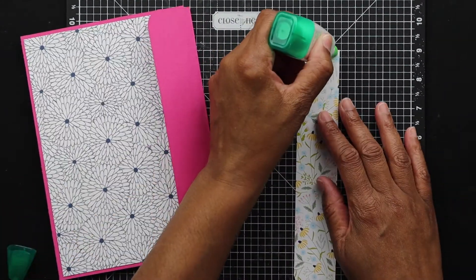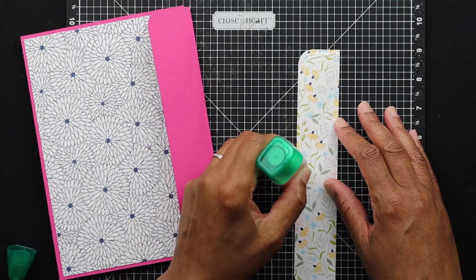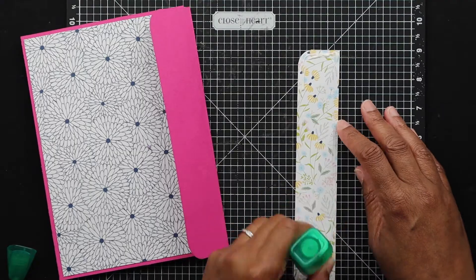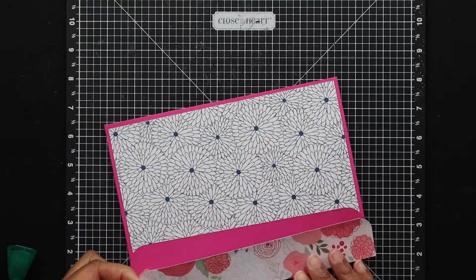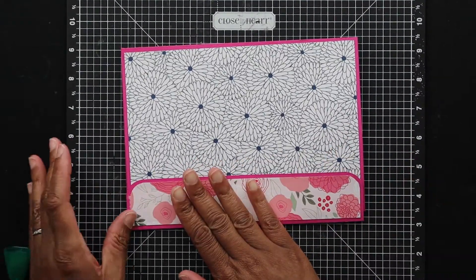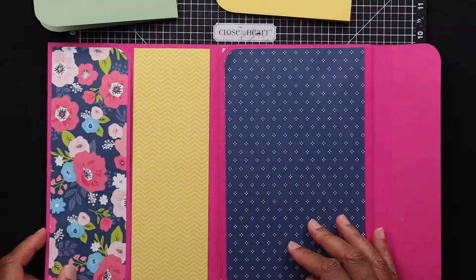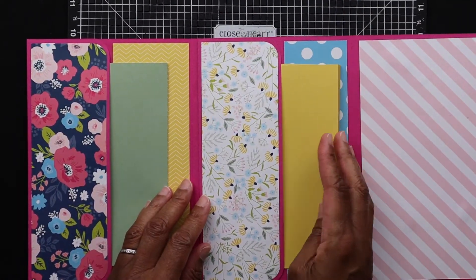Now I could have cut these as a rounded corner within Cricut, but I just decided to go ahead and cut them square and then use my corner rounder on the half-inch depth part to go ahead and put that on my flap. And so now you can see where I've got my pockets and how they would fit in, and so now I'm going to decorate them.